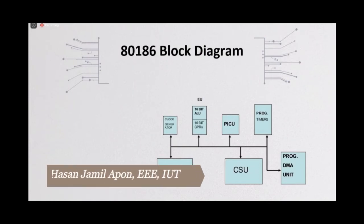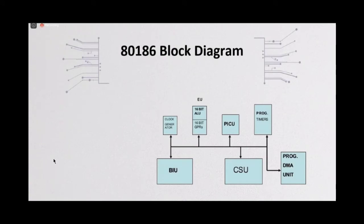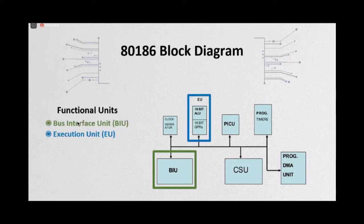I am Hassan Jamil. Now I will continue from the block diagram of 80186 microprocessor. Like 8086 microprocessor, 80186 also has bus interface unit and execution unit. Bus interface unit basically works as data transfer from memory to microprocessor or ports and vice versa. And execution unit does all the calculation and computational tasks.